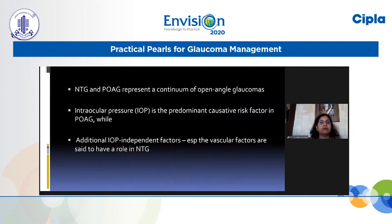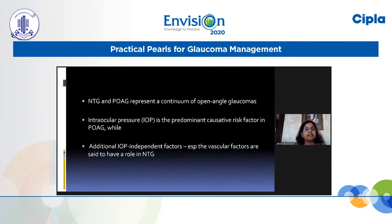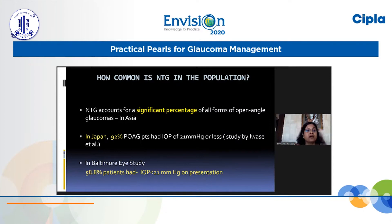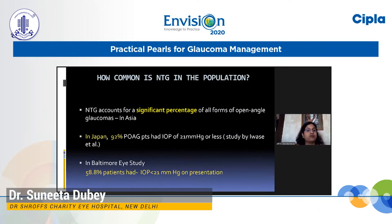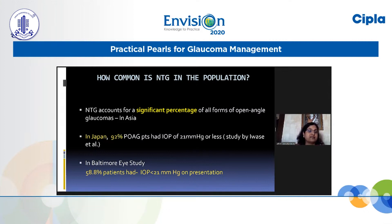I'll be talking on normal tension glaucoma. As we know, NTG and POAG represent a continuum of open-angle glaucomas. While intraocular pressure is a predominant causative risk factor in POAG, additional IOP-independent factors, especially the vascular factors, are said to have a role in NTG, as emphasized by the previous two speakers.